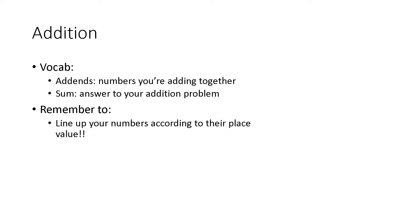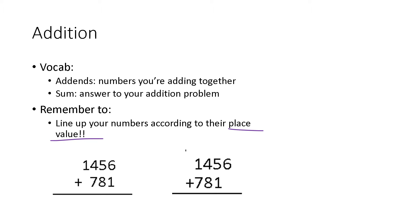Some things to remember when we talk about addition — hopefully most of this will be review and that's a good thing. You should always remember to line up your numbers according to their place value. And that's why we spent a whole lecture making sure that you're comfortable with place value. So what do we mean by line up your numbers according to place value? One of these problems should look good to you and one of these problems should make you twitch a little bit. When I say line up your numbers according to place value, you want to make sure that your ones are in the ones column and your tens are in the tens column.